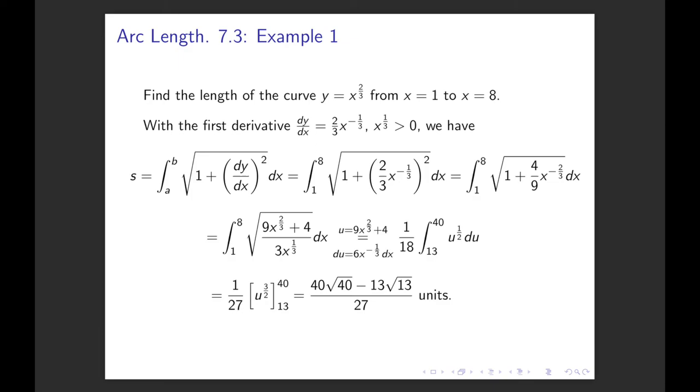So we substitute u = 9x^(2/3) + 4, and get a much nicer integral, which is 1/18, from 13 to 40, the integral over u^(1/2) du. 13 and 40 are the changed boundaries because, as you know, when we substitute, we also have to substitute the boundaries.